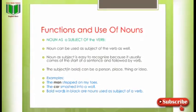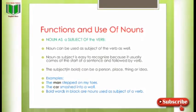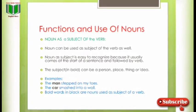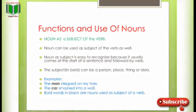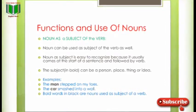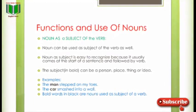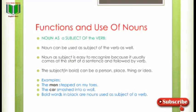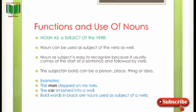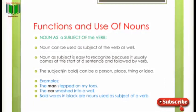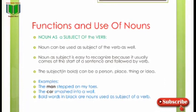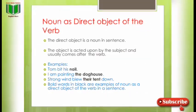Functions and uses of nouns — noun کے کئی functions ہوتے ہیں۔ Noun as a subject of the verb: noun can be used as the subject of the verb. It is easy to recognize because it usually comes at the start of a sentence and is followed by the verb. Examples: 'The man stepped on my toes.' 'The car smashed into a wall.' Bold words are nouns used as subject.